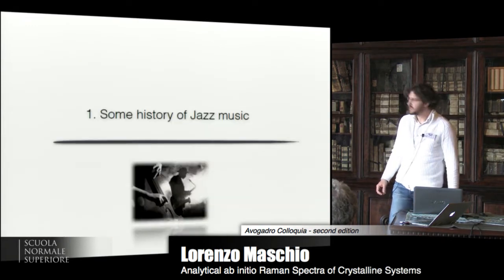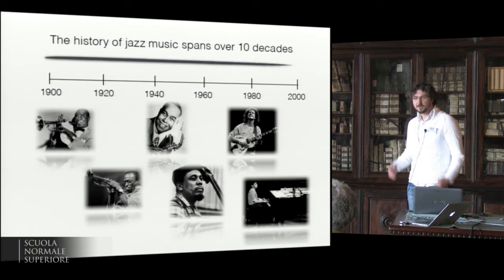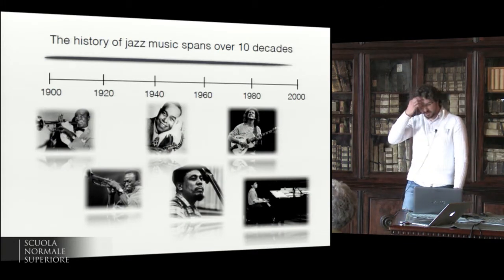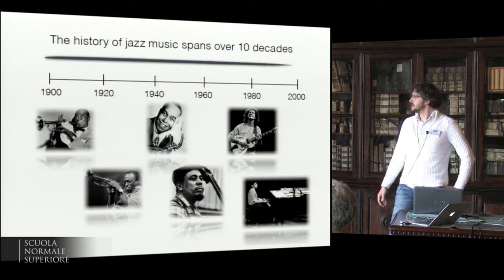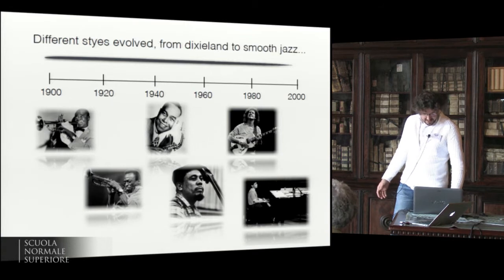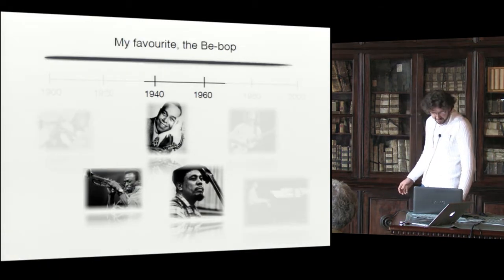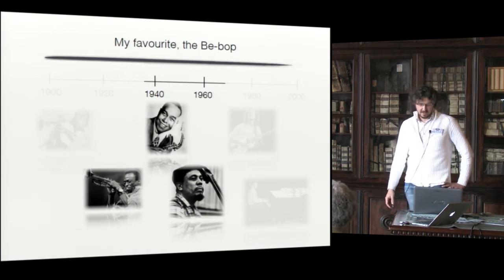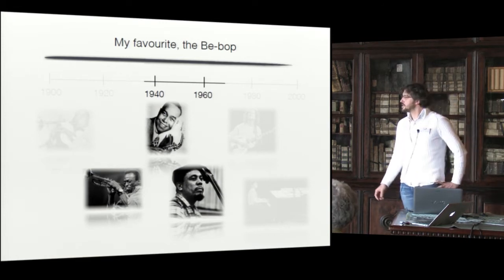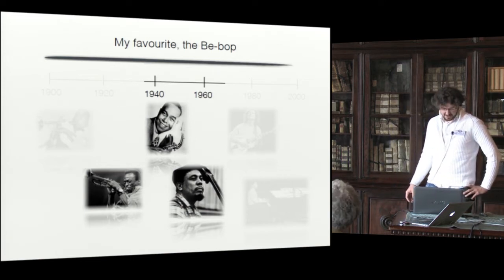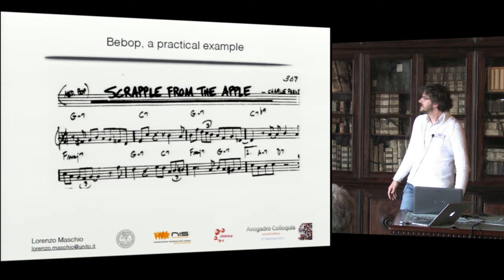Before going into the details of the scientific part of this talk, let me make a small digression to jazz music. Jazz music is a musical style that spans over more than ten decades and has seen many notable players, making it one of the most important styles in modern music. There are different styles that evolved from the Dixieland of the first times to the smooth jazz of more recent times. My favorite style is the bebop, which evolved around the 40s and 50s of last century, with most prominent examples like Charlie Parker. This is an example of a bebop jazz tune from Charlie Parker.